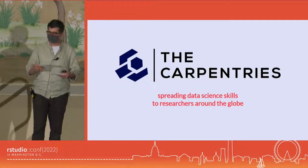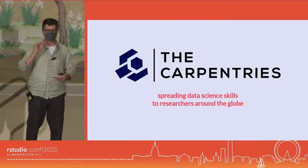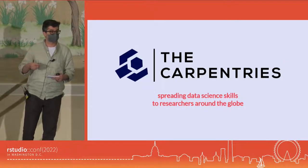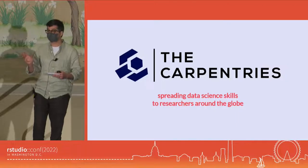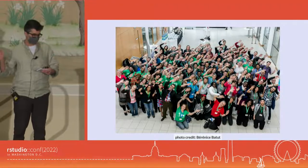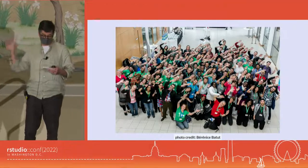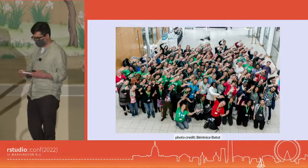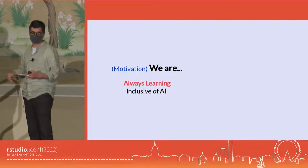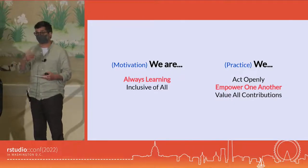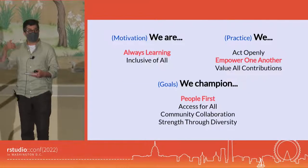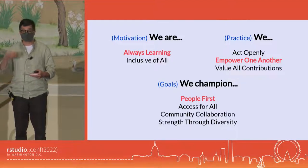I know now that The Carpentries provides that support and gives a safe space for improving my teaching. The Carpentries is all about spreading data science skills to researchers around the globe to democratize access to data. It does this by fostering communities of practice — volunteers trained in evidence-based teaching principles from all around the world. We all come together through shared core values: we are always learning and inclusive of all. In practice, we act openly, empower one another, and value all contributions, allowing us to champion people first, access for all, community collaboration, and strength through diversity.